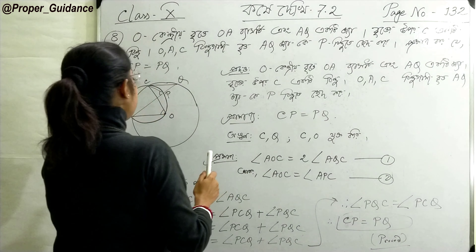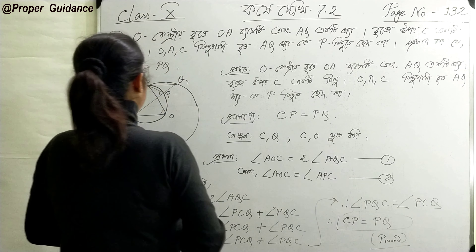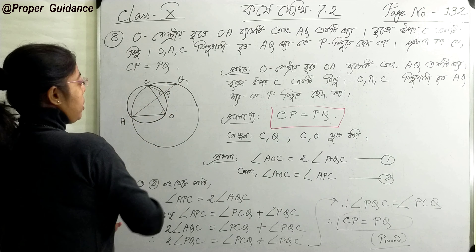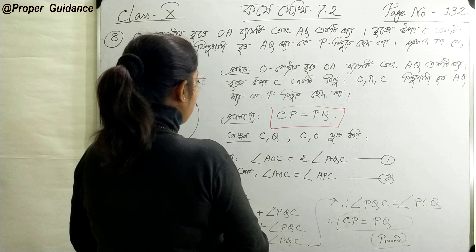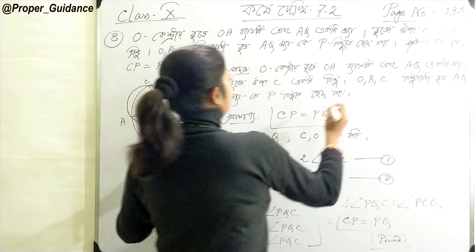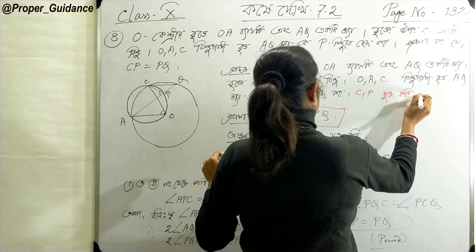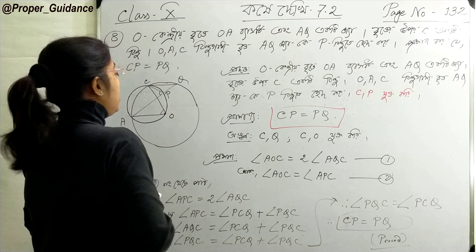Let's write it down. The way we write the proof — first comes 'Given' (Pradatta), which means what is given to us. The center O lies on the circle; C is a point on the circle. O, A, C are points on the circle, and AQ cuts at point P. Now, 'To Prove': CP equals PQ.